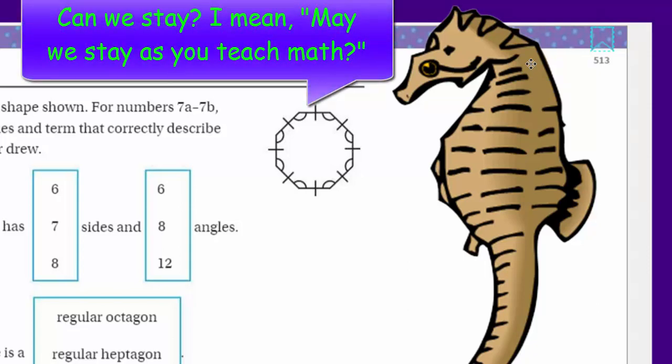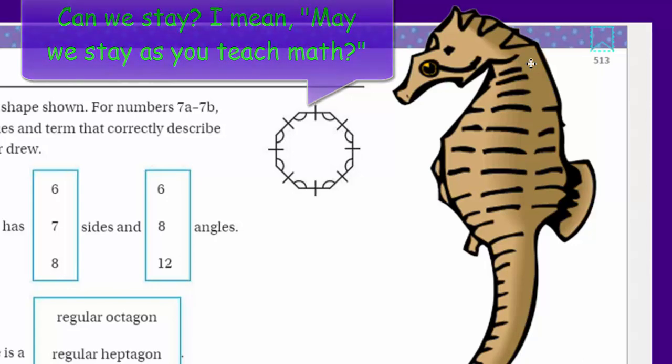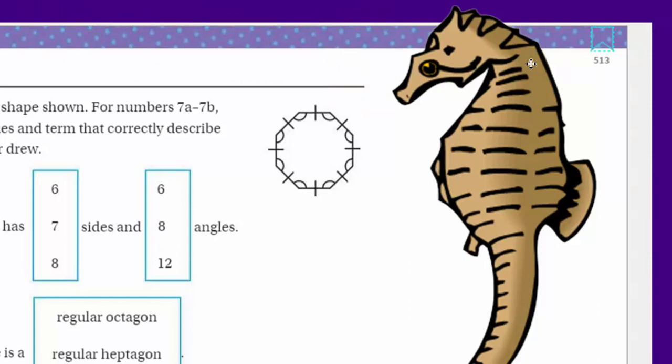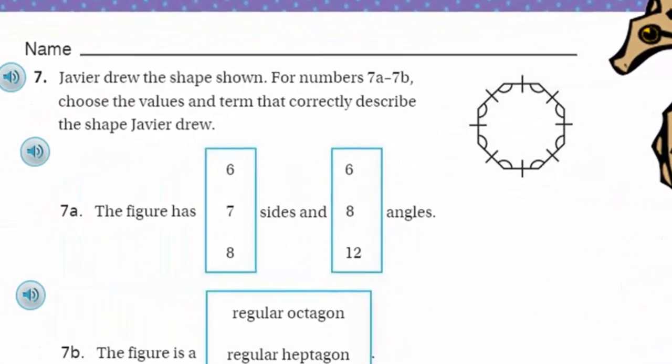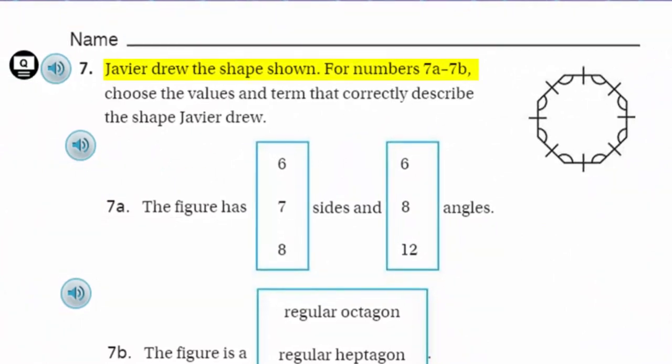Review video 2 for chapter 11. I'm excited to see our seahorse - see, I told you we'd bring you back. You guys can stay in the video, no problem. Just as long as you stay out of the way. Let's go ahead and get started. Number 7: It says that Javier drew the shape shown. I do see the shape. For number 7a through 7b, choose the values and term that correctly describe the shape Javier drew. When we talk about values, usually in math we refer to numbers, and the term, of course, being a name.